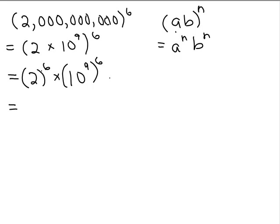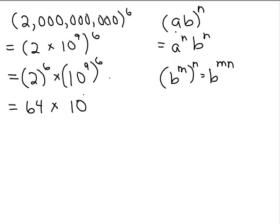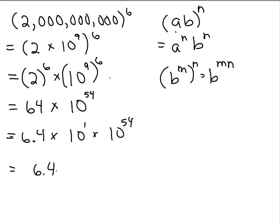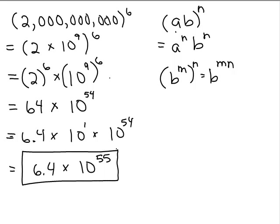2 to the 6th: that's 2 times 2 times 2 times 2 times 2 times 2 — it's 64. And for 10 to the 9th raised to the 6th, using the law of exponents where you multiply the exponents: 9 times 6 is 54. Not quite in scientific notation yet, but I can write 64 as 6.4 times 10 to the 1st times 10 to the 54th. Now I've got my whole answer in scientific notation. So 2 billion to the 6th power is 6.4 times 10 to the 55th.